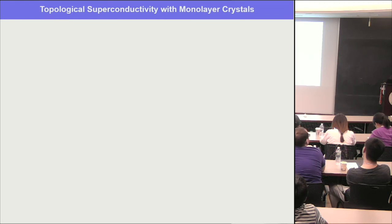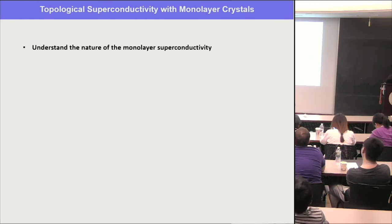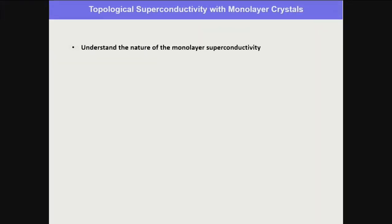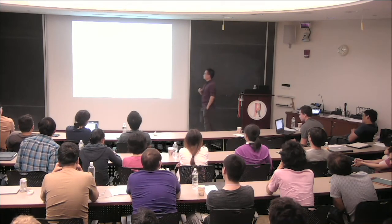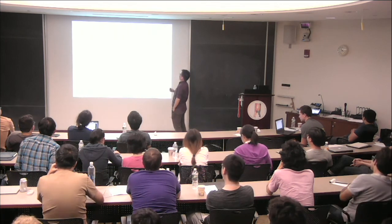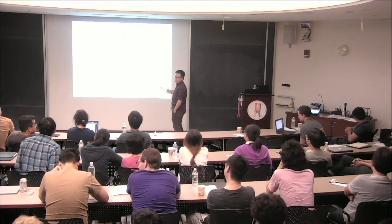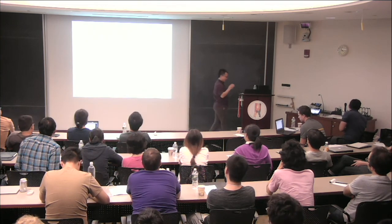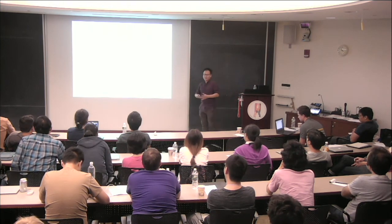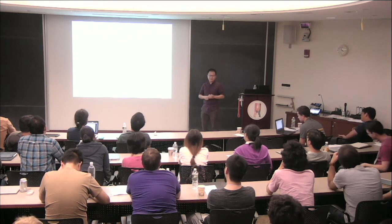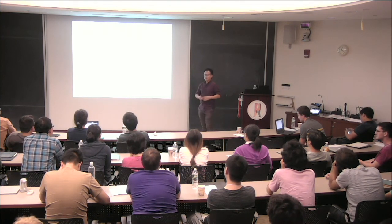We look forward to exploring this new territory. A summary: we want to understand more of the superconductivity. The intrinsic nature is one aspect. The other aspect is the connection to topology — because it's a topological material, now you see superconductivity can be topological superconductivity. There are theoretical predictions after the discovery suggesting possible higher-order topological superconductors with Majorana corner states, for example.